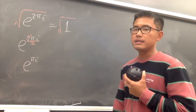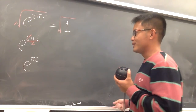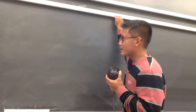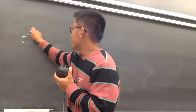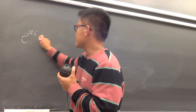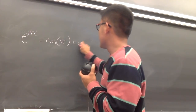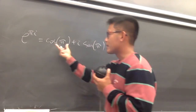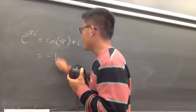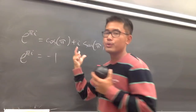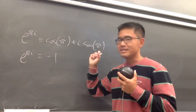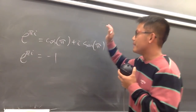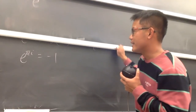And do we know what e to the πi is? Well, we can use Euler's formula again. e to the πi equals cosine of π plus i sine of π. Sine π is 0, so that term is 0. But cosine π is equal to negative 1. So e to the πi is equal to negative 1. This is the famous Euler's identity if you add one on both sides.